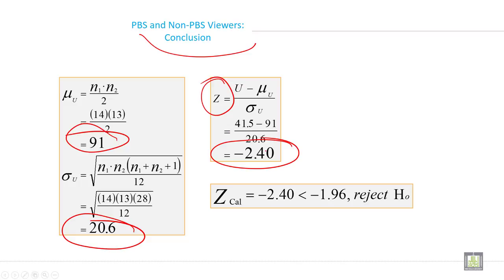Minus 2.40 is less than minus 1.96, and the decision will be to reject the null hypothesis because we have written that if the calculated z value is less than minus 1.96, then we will reject the null hypothesis. So here the decision will be reject null hypothesis.